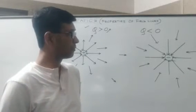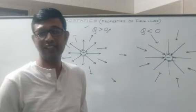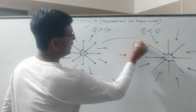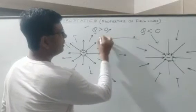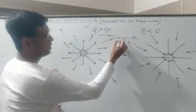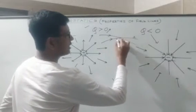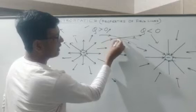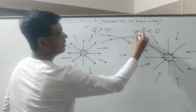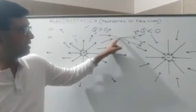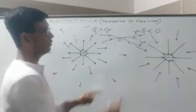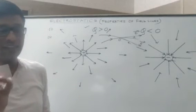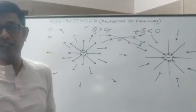Another property: field lines can never intersect each other. At any given point the direction of the electric field is unique. If the field lines were intersecting, at the point of intersection you would get two different directions of the electric field, which is obviously not feasible. The direction of the electric field at a given point must be unique — it cannot have more than one direction.